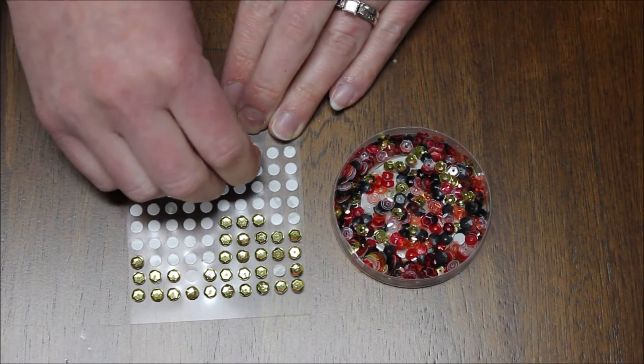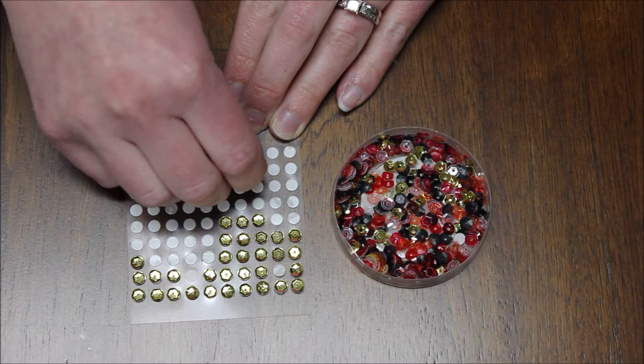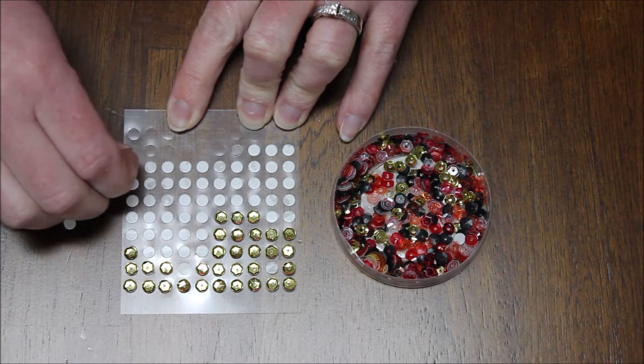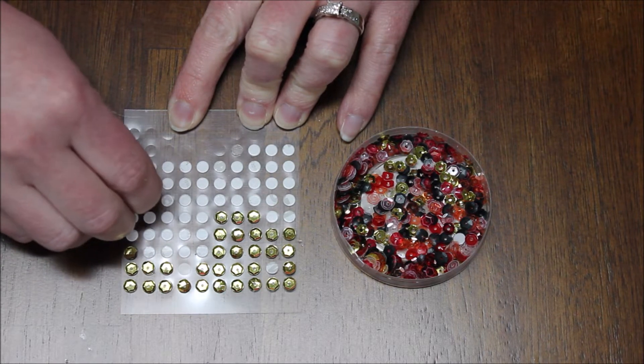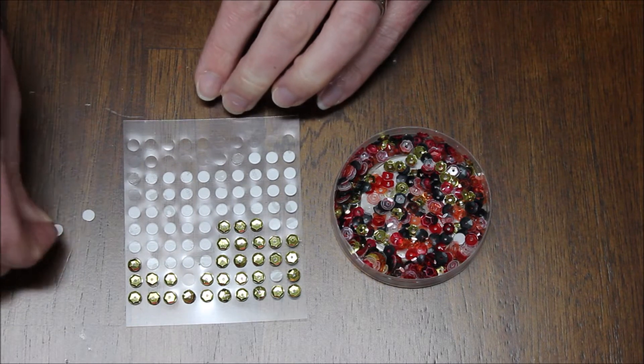These mini glue dots come in handy for lots of different projects including making my own adhesive back sequins. So what I simply did was I peeled off the back. Now in this instance, you actually want to peel off the paper back, but you want to leave the sticky on this clear sheet. So some of them, I'm not going to lie, like that one, it actually just completely came off.